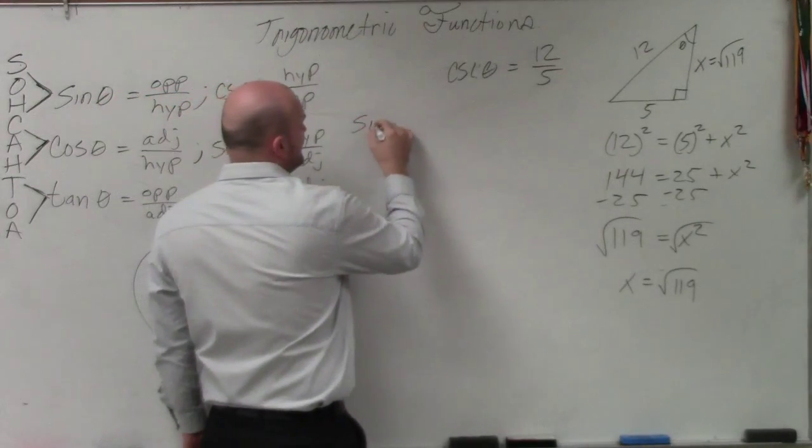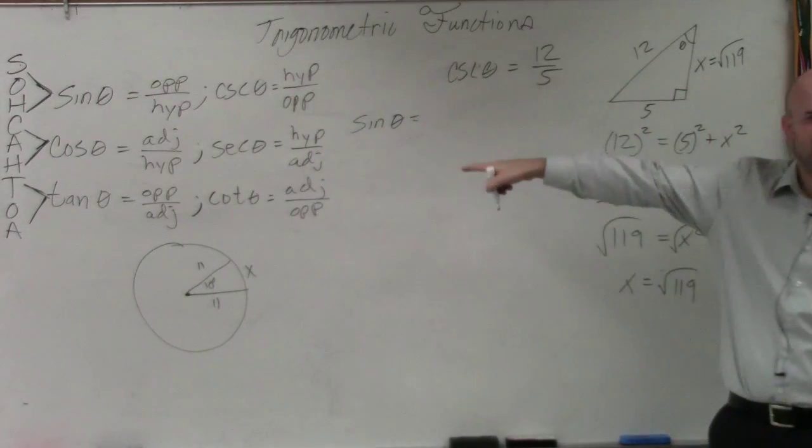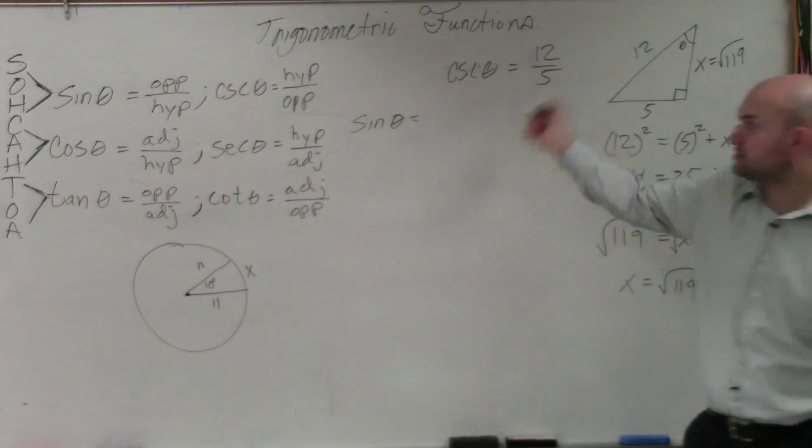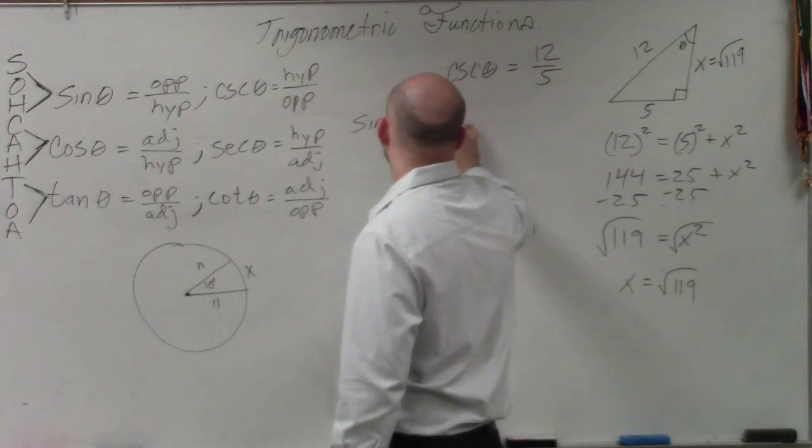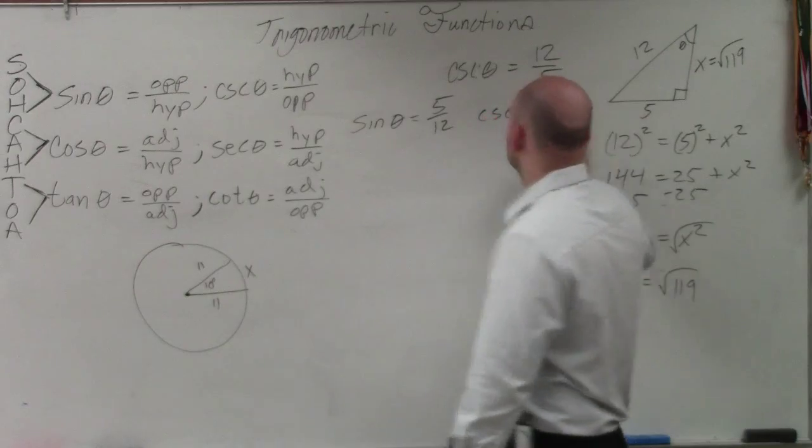So now, we have all the side lengths. And ladies and gentlemen, if we know cosecant, can we easily find out what sine is? Yeah. So it's a reciprocal, right? So now, we can do cosine of theta.